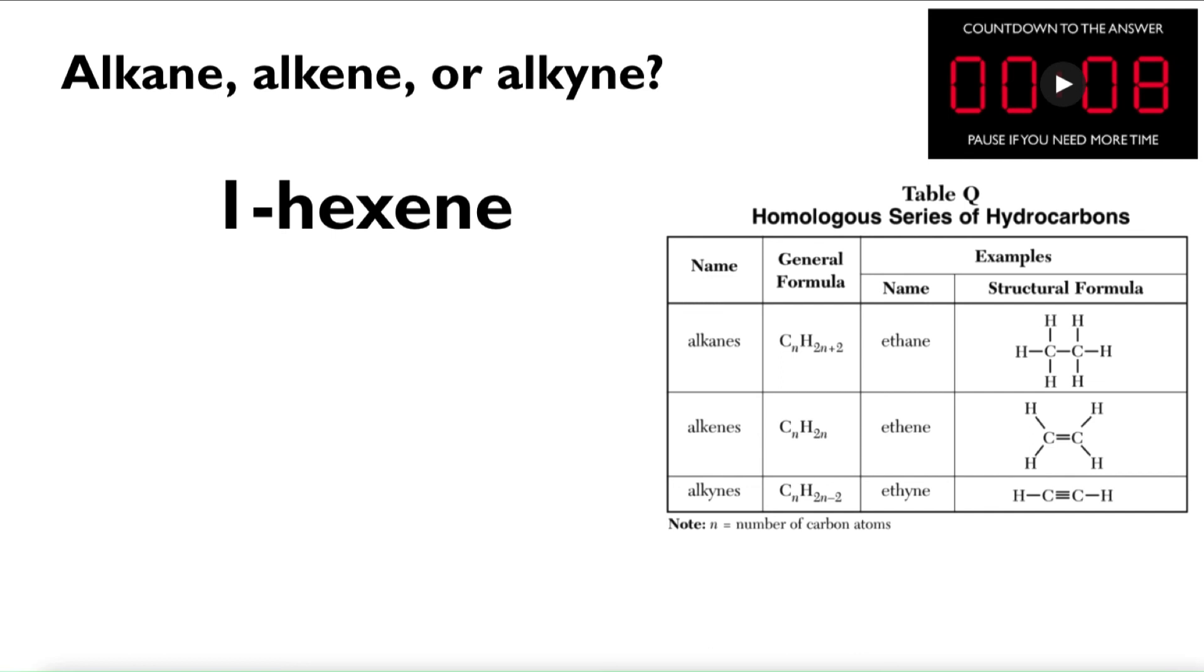Finally, 1-hexene. Let's take 10 seconds. Alkane, alkene, or alkyne. This one is an alkene. It ends in E-N-E. And if we want to be a little fancier, we can say, okay, 1-hexene. Hex means six, if I look at my prefixes table. So that would be C6H12. And because there's a one there, that tells me the double bond is on the first carbon.